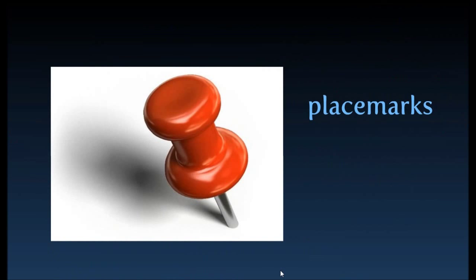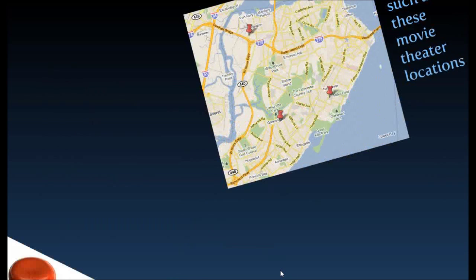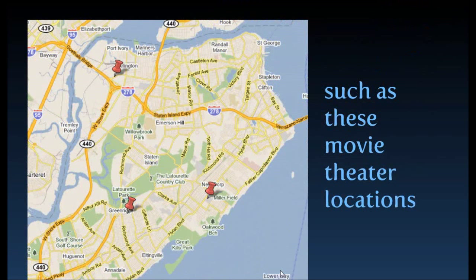Another thing that you can do in Google Maps — hopefully you're going to learn throughout the lesson some of the different things about how you can use that — and that's placemarks. You can put placemarks on maps. For instance, if you wanted to highlight certain points within or near your community, like movie theater locations, here are a couple of examples. I'm using Staten Island as my example because that's where I live. I created a custom map with placemarks, and I'm going to show you how to do that.